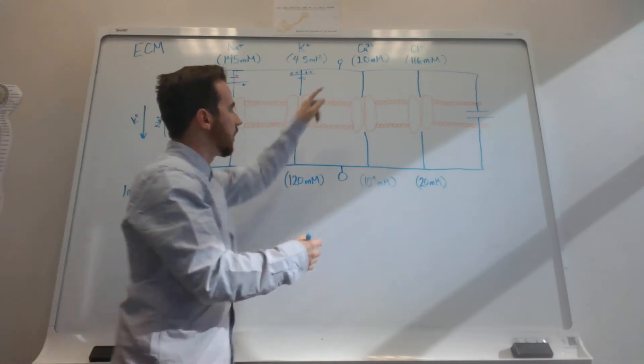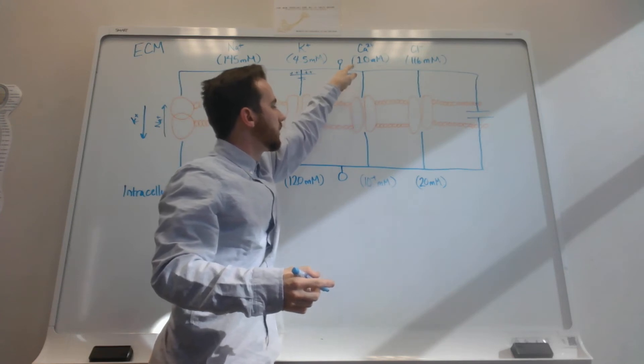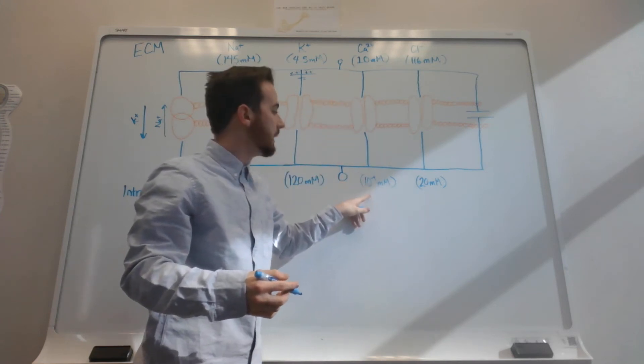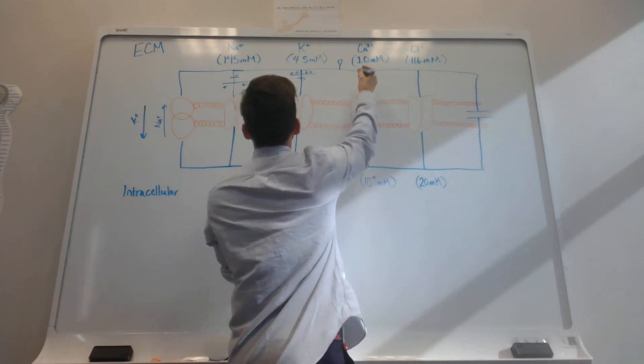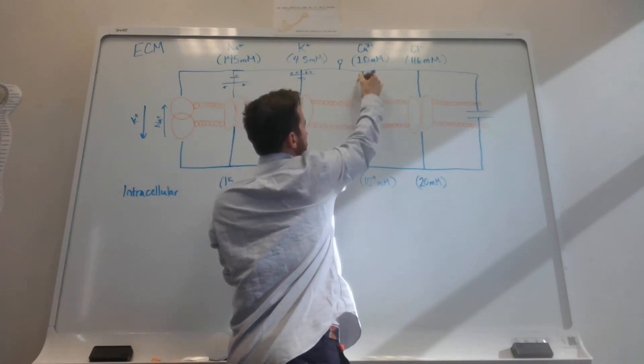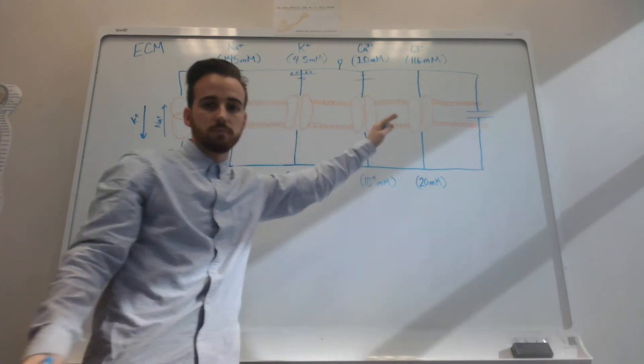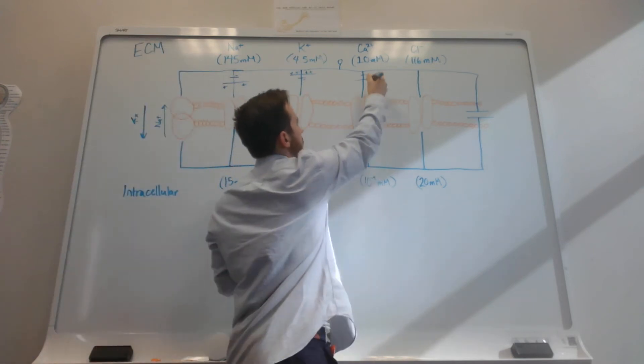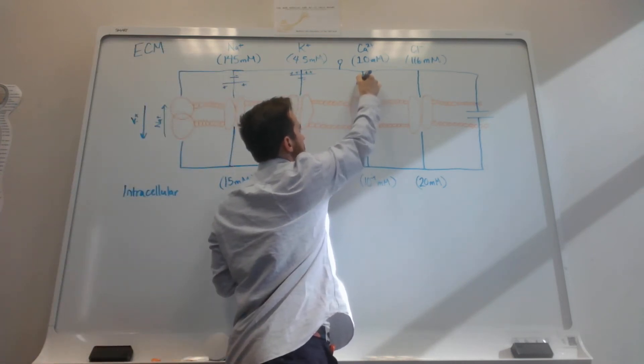Calcium has 1 millimolar outside the cell and 10 to the negative 4 millimolars inside the cell. So that's going to be moving like the sodium, positive channels. Positive ions are going to want to go into the cell here.